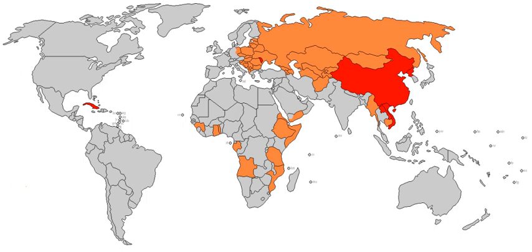Capitalist systems range from laissez-faire, with minimal government regulation and state enterprise, to regulated and social market systems, with the aims of ameliorating market failures or supplementing the private marketplace with social policies to promote equal opportunities, respectively. In socialist economic systems, production for use is carried out, decisions regarding the use of the means of production are adjusted to satisfy economic demand, and investment is determined through economic planning procedures. There is a wide range of proposed planning procedures and ownership structures for socialist systems, with the common feature among them being the social ownership of the means of production. This might take the form of public ownership by all of the society, or ownership cooperatively by their employees.